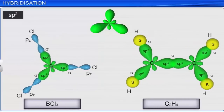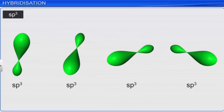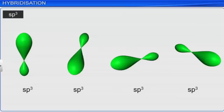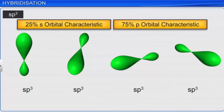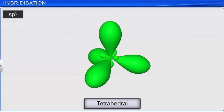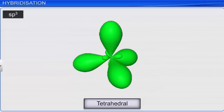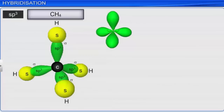In SP³ hybridization, one S orbital combines with all three P orbitals to form four equivalent SP³ hybrid orbitals. Each hybrid SP³ orbital displays 25% S orbital characteristics and 75% P orbital characteristics. They have a tetrahedral arrangement, and the angle between two orbitals is 109.5 degrees. Compounds whose central atom displays SP³ hybridization include CH₄ and C₂H₆.